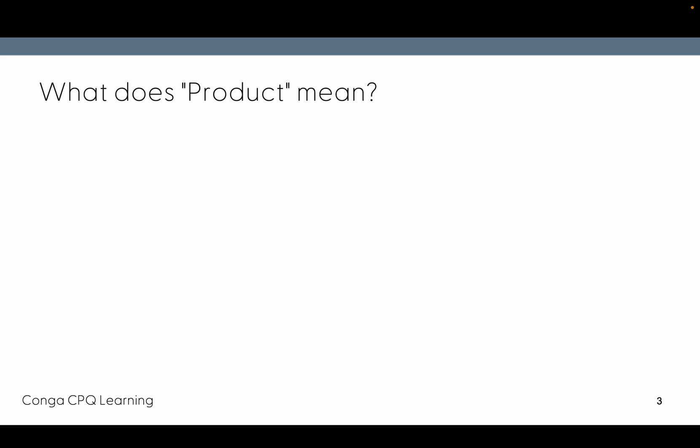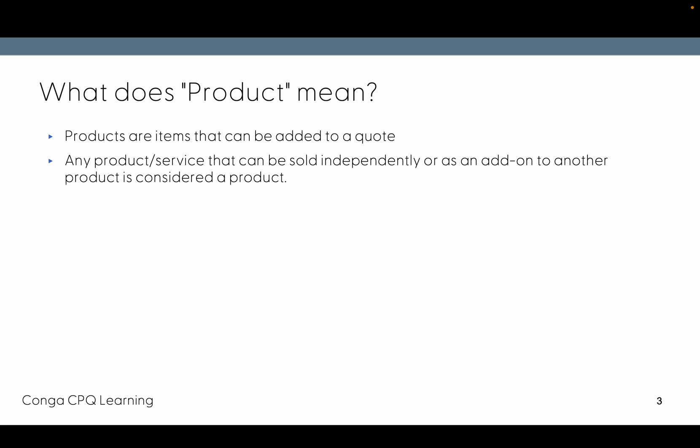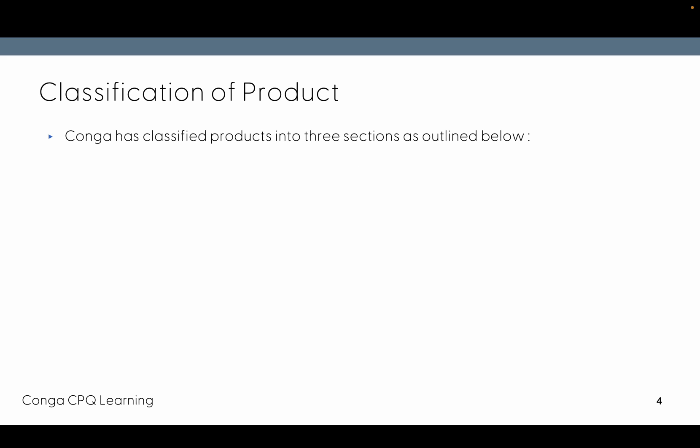What does product mean? A product is an item that can be added to a quote. Any product or service that can be sold independently or as an add-on to another product is considered a product. A product can be offered either as a one-time sale, a one-time service, or as a recurring service.